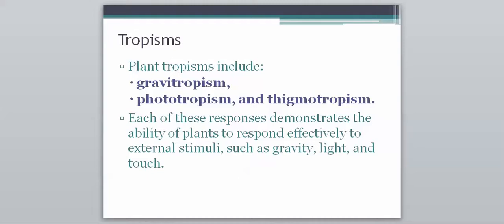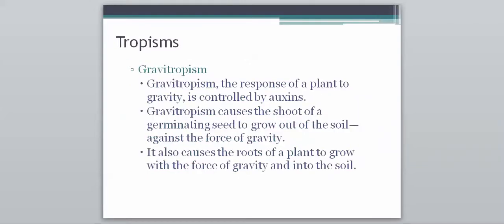So we're just going to get a quick introduction about each one of these. So gravitropism is the response of a plant to gravity. It's controlled by auxins, which we all know. And it causes the shoot of a germinating seed to grow out of the soil against the force of gravity. So usually you would think just a weak little plant, the force of gravity would be able to push it right down. However, gravitropism, with the help of auxin, forces it against the force of gravity to go up. And it will also cause the root of a plant to grow with the force of gravity and into the soil. So that's how gravitropism, how gravity, plays a role with plants.